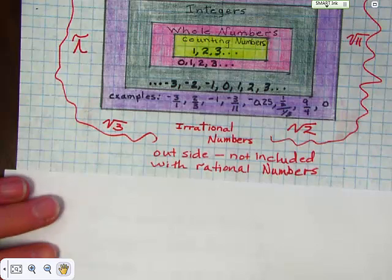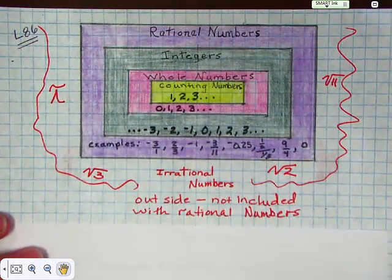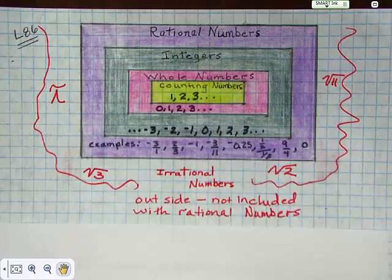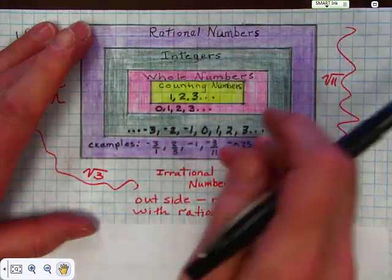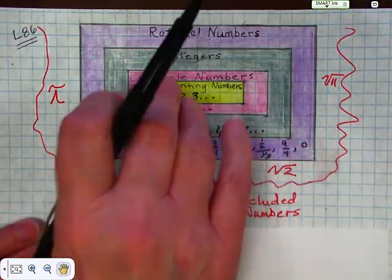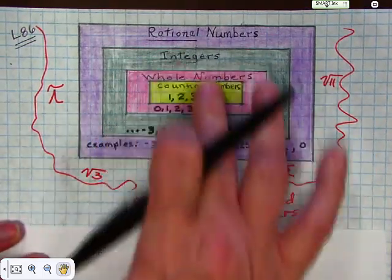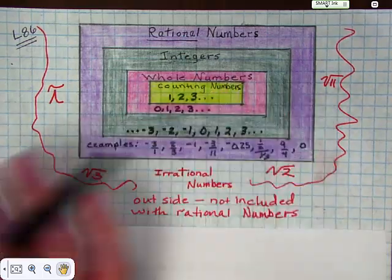I made this chart — I would like you to make this chart too. Put it in your notebook so that you have it if you have questions about whether something is rational. Anything included inside of this purple box is going to be a rational number. If it's not included in these groups, then it's irrational.